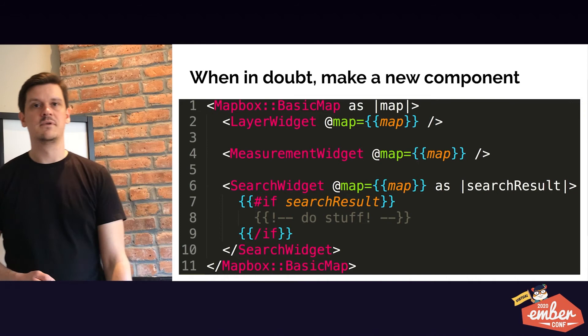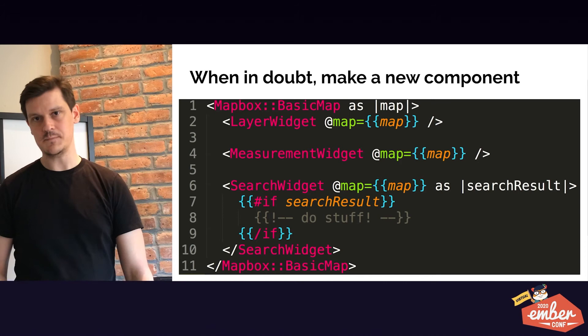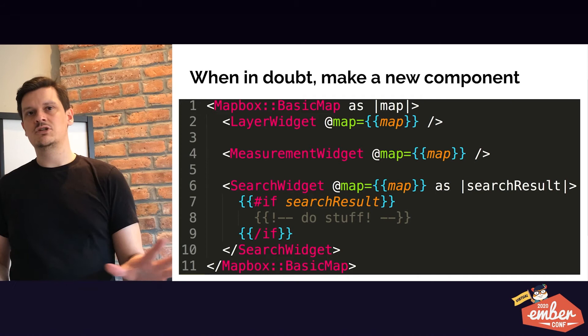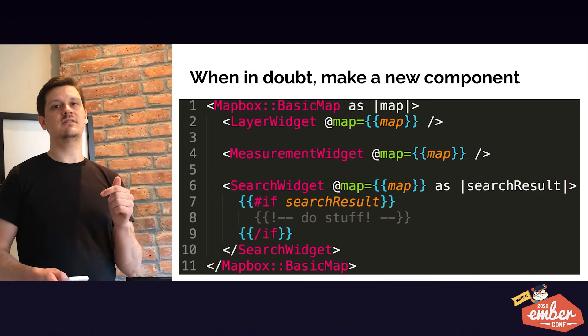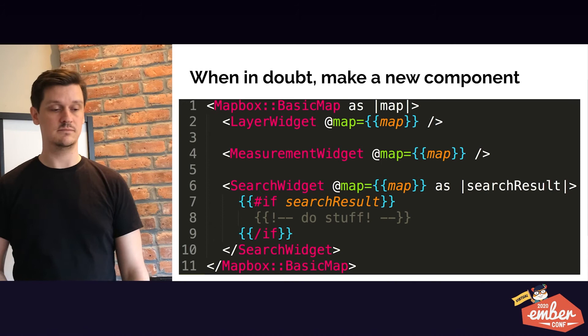For example, on line two we have the measurement widget — we simply pass down the map into that layer widget and all the layer concerns happen there. Line four, measurement widget — pass down the map. It's really just separating concerns and giving things the dependencies they really need, understanding what those dependencies are. All these things depend on a map instance. That makes it easier to test and easier to split things out. Lesson here: don't abstract too soon.